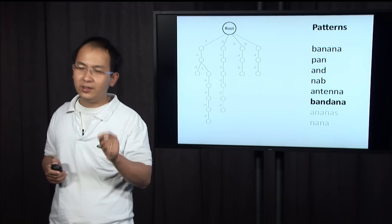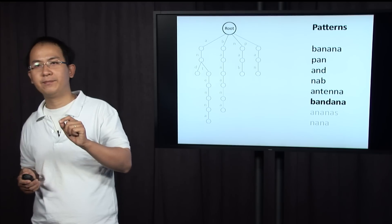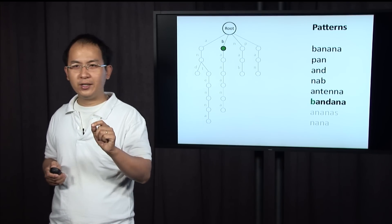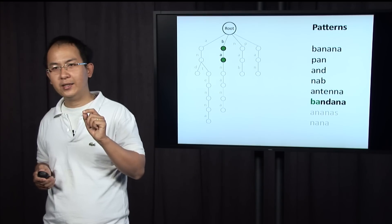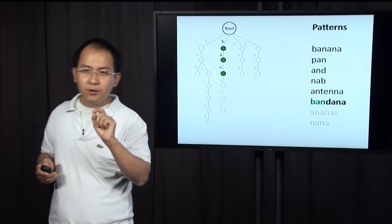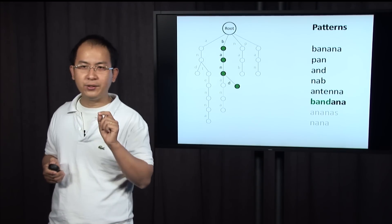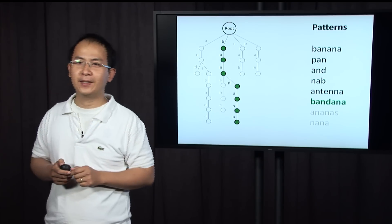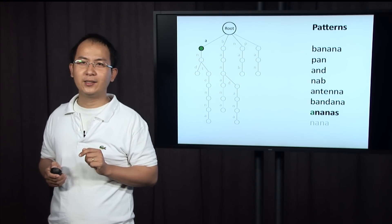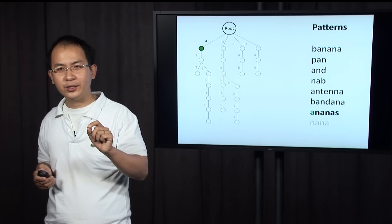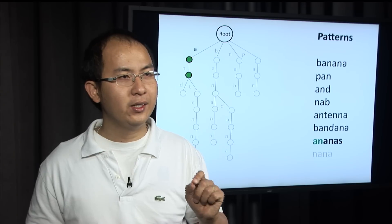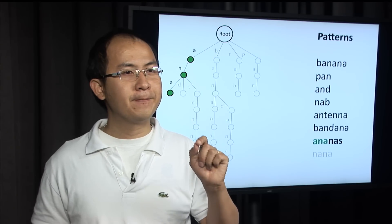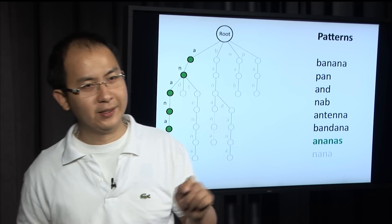The next pattern is bandana. We start from the root — we already have B, so we don't create a new one. Then A, N. There's no B going down from here, so we create a new one, then N and A. The next pattern is ananas. We already have A, so we follow down. There's no second A here, so we create a new A, then N, A, S.